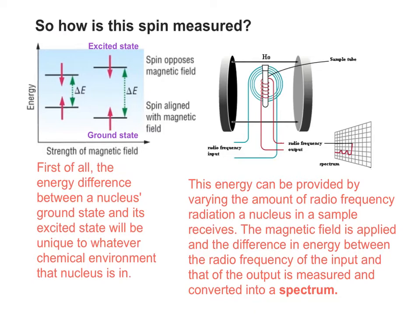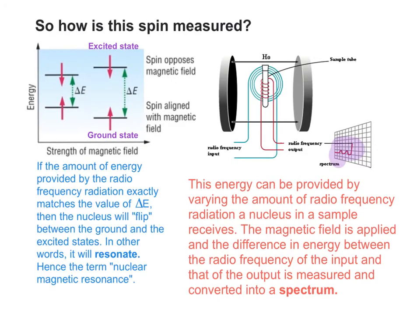What happens is that the absorption of that energy to make that flipping and resonance work is picked up by the NMR spectrometer and converted into a spectrum. If delta E matches the value of the radiofrequency radiation being applied, your nucleus will resonate, and therefore we call this type of spectroscopy nuclear magnetic resonance spectroscopy.